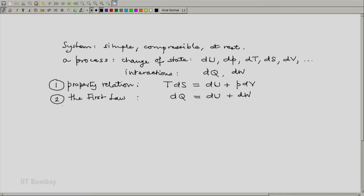Then the third relation is the second law. What does the second law say? Second law says that dS must be greater than or equal to dQ by T. Or multiplying both sides by T, we will get TdS is greater than or equal to dQ. Now what does this mean? TdS is greater than or equal to dQ.